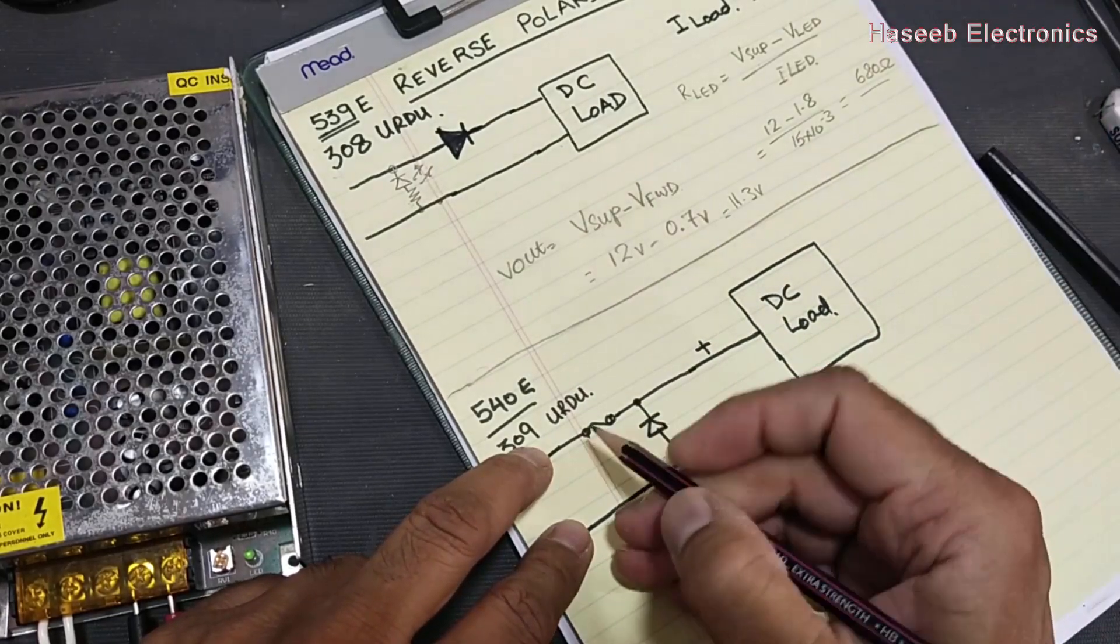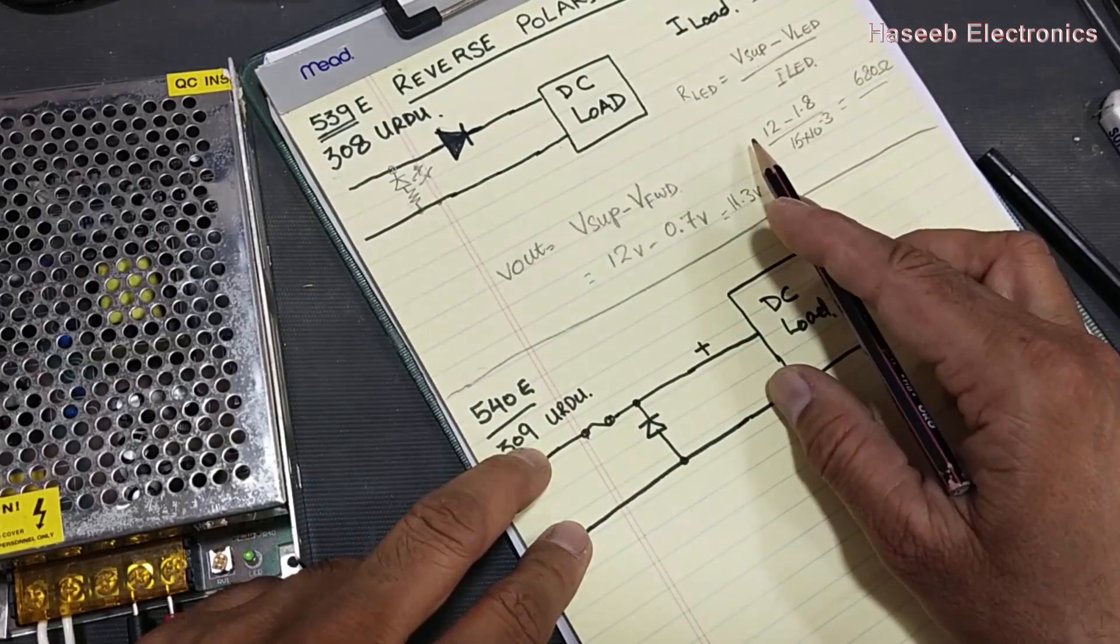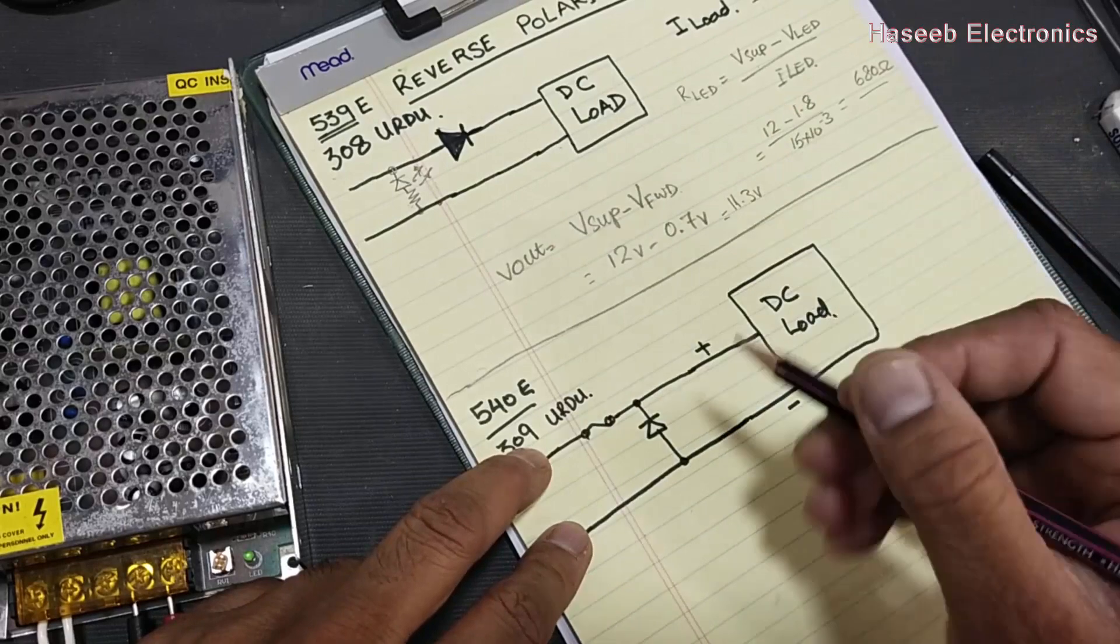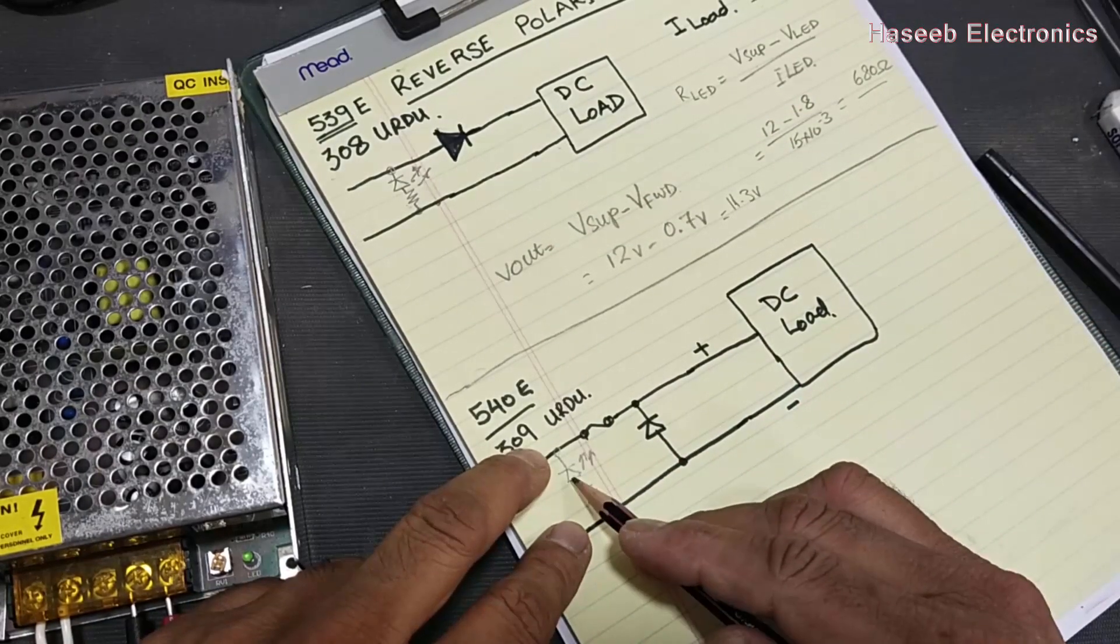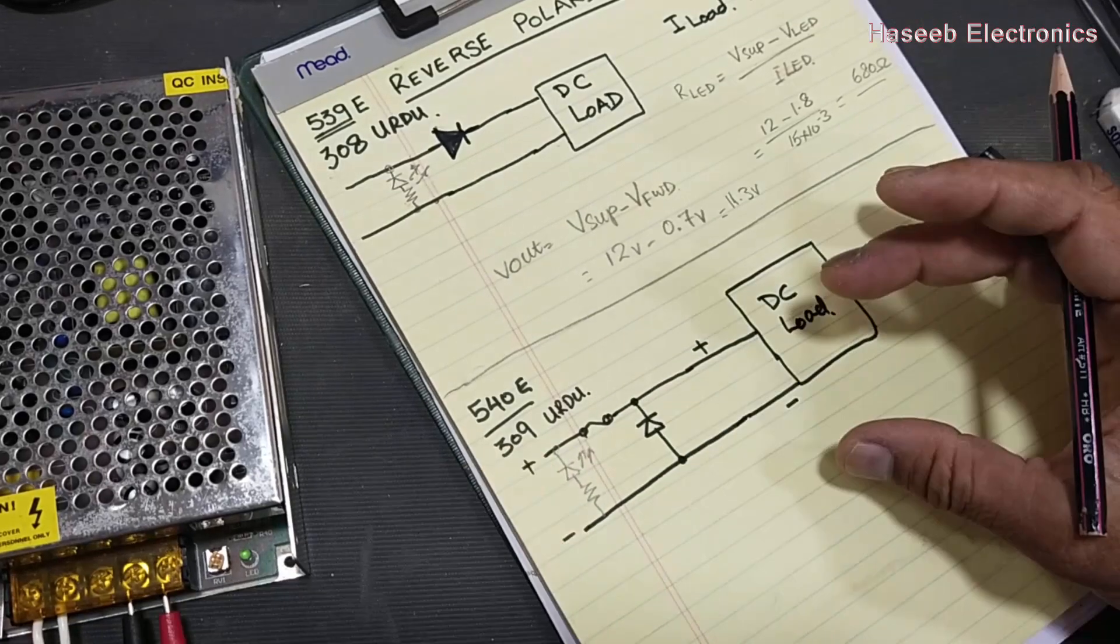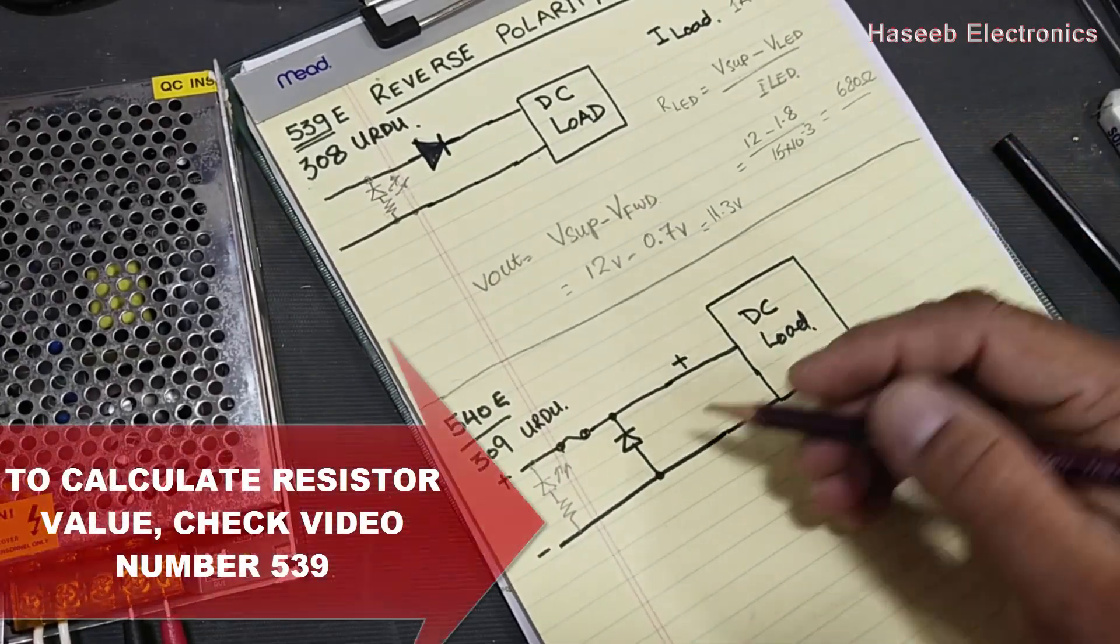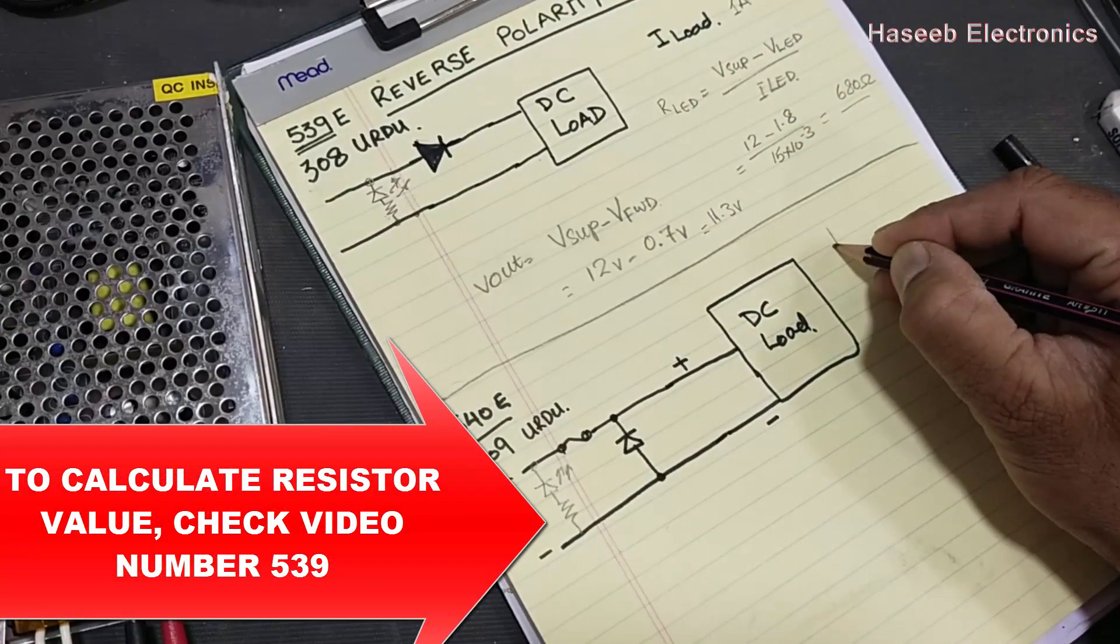When the fuse will burn out, the circuit will be protected. For that purpose, we can also use the same reverse polarity protection I discussed, how to calculate. You can check this video, a reverse polarity indicator. You can connect a red LED for warning that the polarity is reversed.